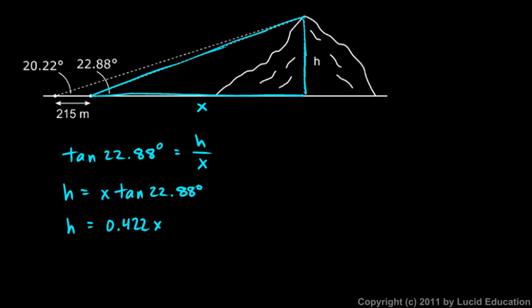Now let's look at the larger triangle. This one has a different angle here, 20.22, same height, so the opposite side is still h, but the adjacent side is now x plus 215. Let's write our tangent function for that: the tangent of the 20.22 degree angle will be the opposite side, that's h, over the adjacent side, that's x plus 215.